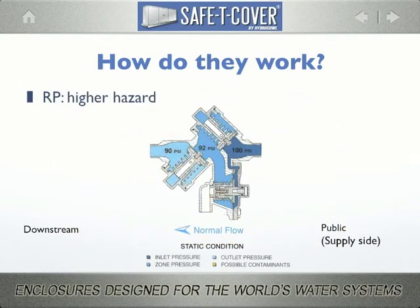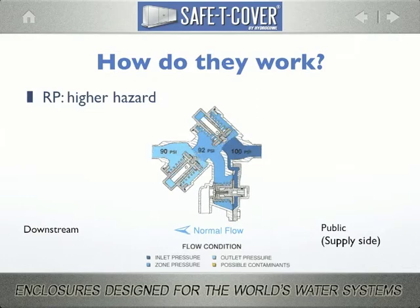The reduced pressure zone assembly consists of two independently operating check valves, just like the double check, plus a hydraulically operated differential relief valve located below the first check valve. In a static or no-flow condition, both check valves are closed. Pressure on the supply side is about 8 psi higher than the pressure in the reduced pressure zone side, so the relief valve remains in the closed position. When water flows from the supply side, both check valves open, and the hydraulic relief valve is also held closed because the supply side pressure remains higher than the reduced pressure zone side.